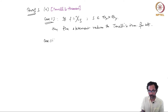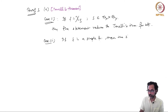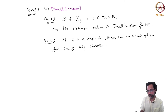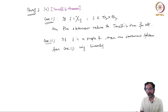The second case is when f is a simple function in the product space. Then the statement follows from case 1 by linearity, using Tonelli's theorem for sets, because a simple function is a finite linear combination of characteristic functions of measurable sets, and so by linearity we get the result for simple functions.